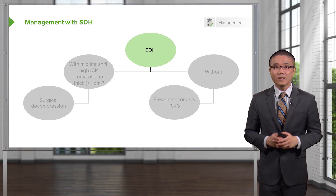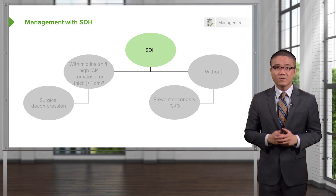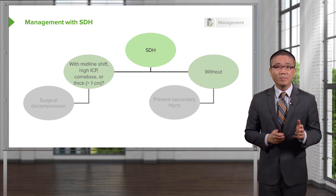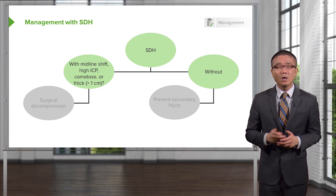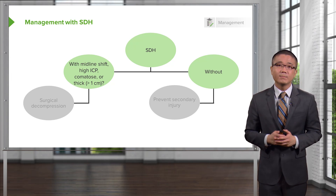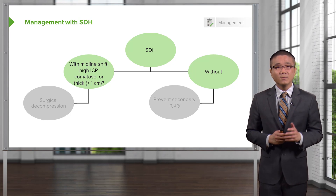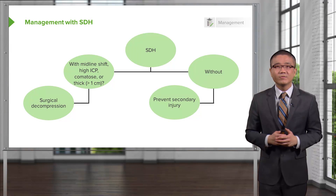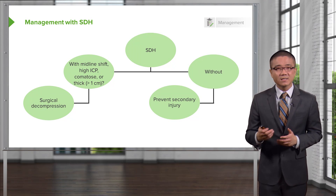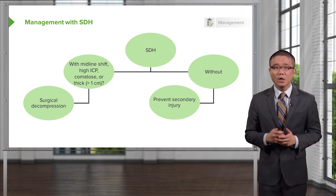How do we manage subdurals? Management is guided by midline shift, intracranial hypertension, clinical pictures such as a comatose or worsening GCS patient, or particularly large subdural hematomas — defined as bleeding hematomas greater than one centimeter in thickness. If these findings are present, consider calling your neurosurgical colleagues for a surgical decompression of the hematoma. If the patient doesn't have any of these significant findings, our job as trauma surgeons is to prevent secondary injury — decreasing swelling and preventing ischemia or low perfusion of the brain.